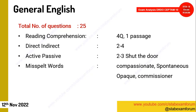In General English — 25 questions. Only one passage appeared this time with four questions; the passage was moderate in difficulty. A few questions on direct and indirect speech and active and passive voice. Some misspelled word questions appeared — words like 'compassionate', 'spontaneous', 'opaque', and 'commissioner' — these are easy to identify.